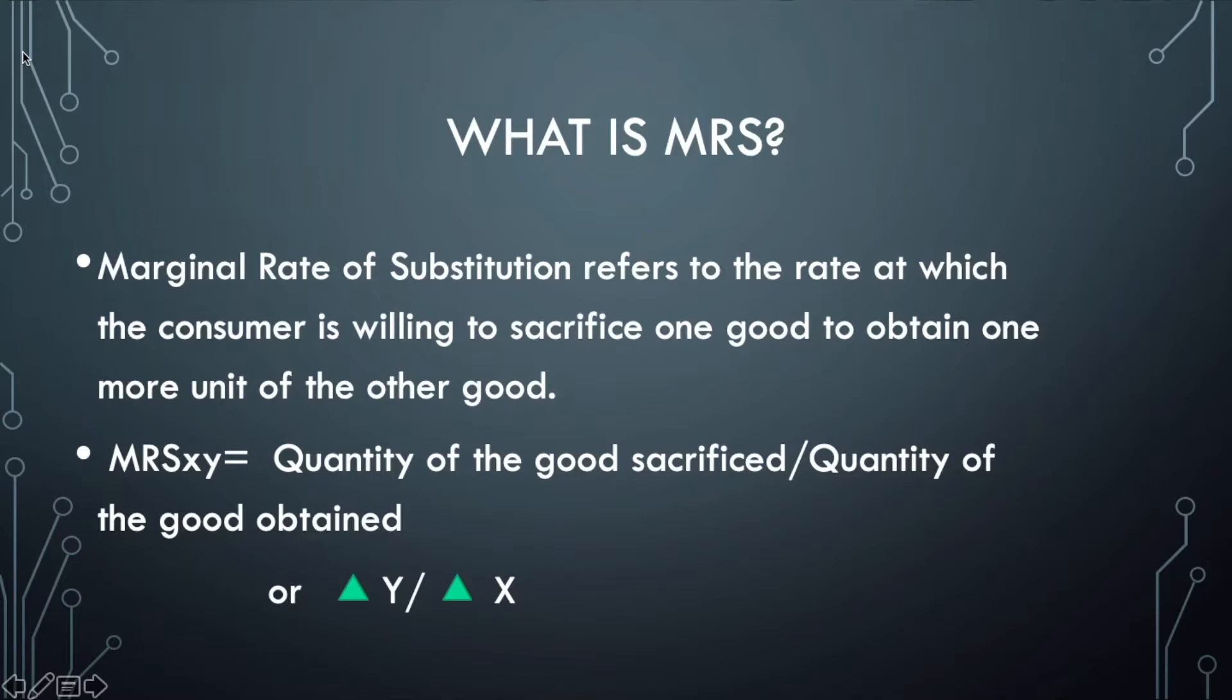MRS XY or the marginal rate of substitution of X for Y is the quantity of the good sacrificed divided by the quantity of the good obtained, or delta Y by delta X, where Y is the unit of good sacrificed and X is the unit of good obtained.